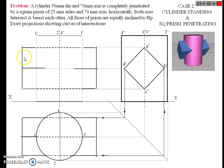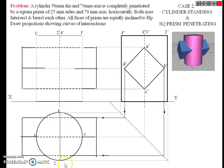So this is the top and front view of the second solid; this is the top view of the first solid; and this is the side view of the second solid. The first step is: draw the top view of the first solid, project it for the front view, and project it for the side view.